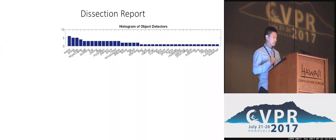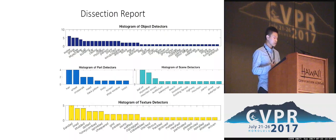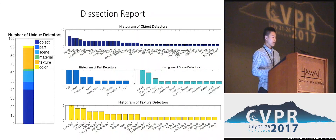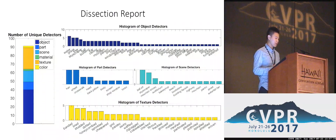Here is a network dissection report generated by our method for the baseline model. It not only generates object detectors, but also identifies other concept detectors like part detectors, scene detectors, and texture detectors. We can summarize these results into a single bar showing the number of unique detectors across high-level concepts like object parts, down to mid- and low-level concepts like materials, texture, and color.